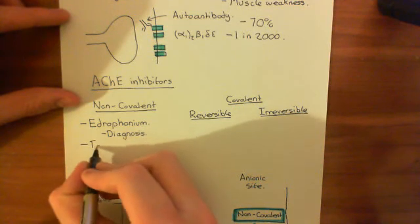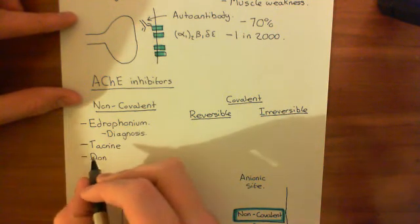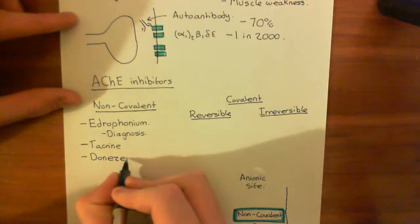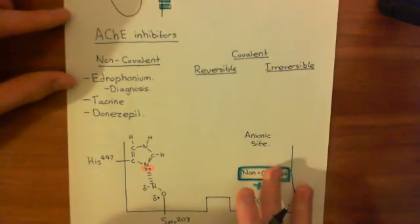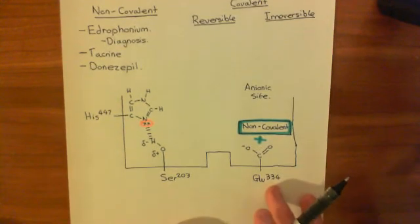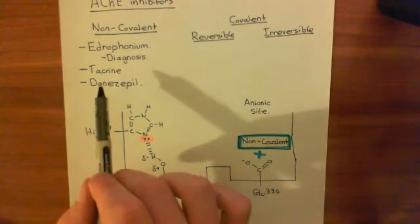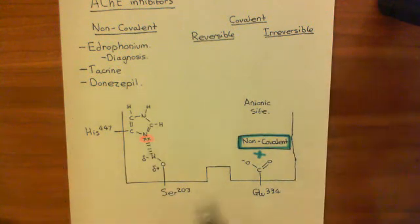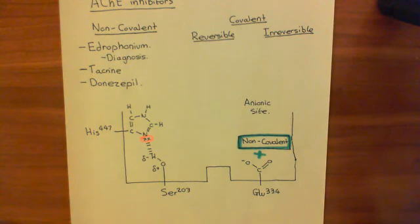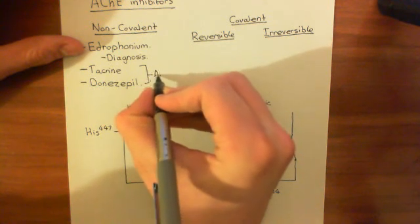Two other non-covalent inhibitors are tacrine and donepezil. These also bind in the anionic site of the acetylcholinesterase enzyme's active site. They are not used to treat myasthenia gravis — instead, they result in increased acetylcholine signalling and are both used to treat Alzheimer's disease.